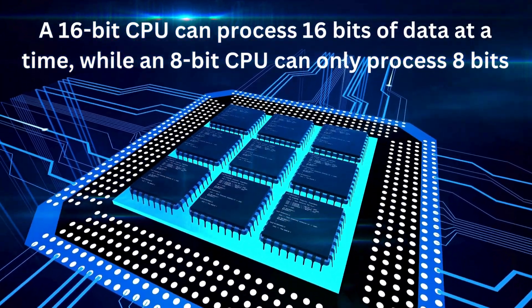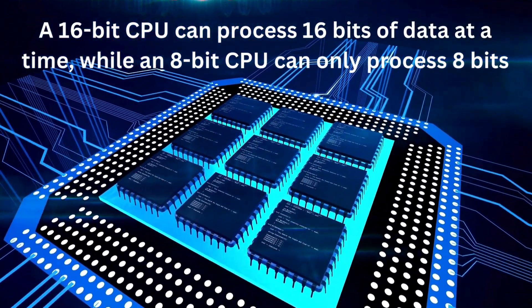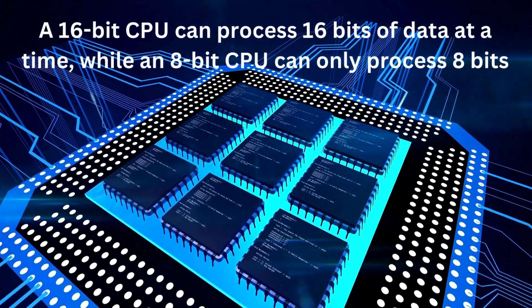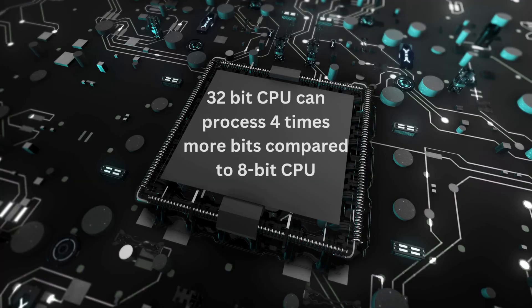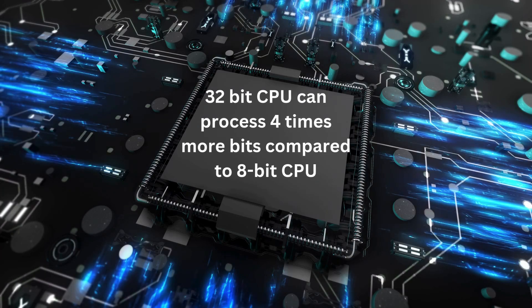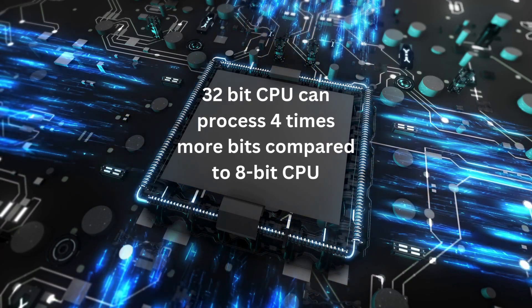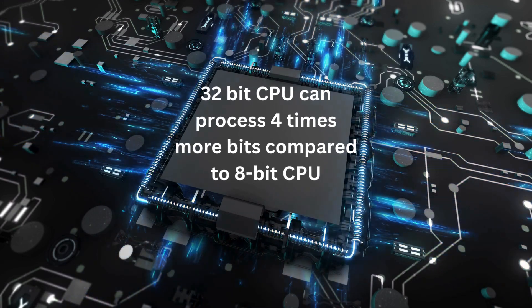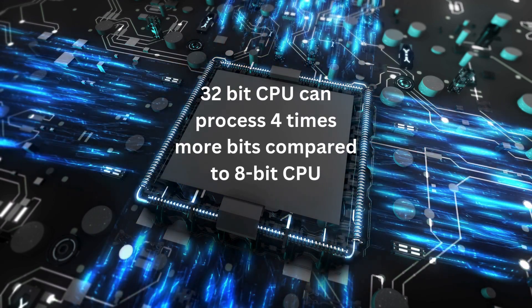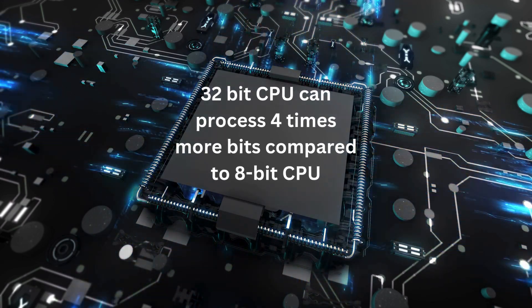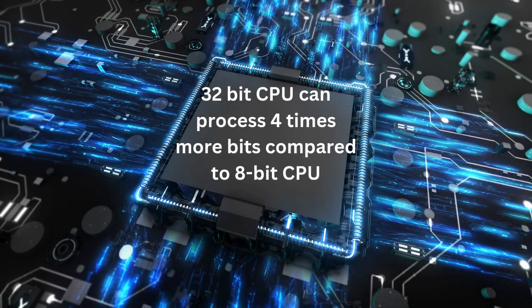Similarly, a 32-bit CPU can process 32 bits of data at a time. This means a 32-bit CPU can process four times more bits of data at the same time compared to an 8-bit CPU.